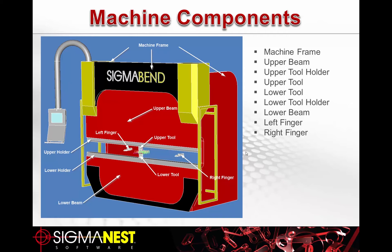The machine consists of a rugged structure — the machine frame itself — made out of probably two or three-inch thick material. Hydraulic cylinders in the top left and right corners generate the pressures that drive downward onto the upper beam, or the ram. You have fingers to hold your parts into position, as well as upper and lower tool holders and a stationary lower beam. Most movement comes from the top of the machine.